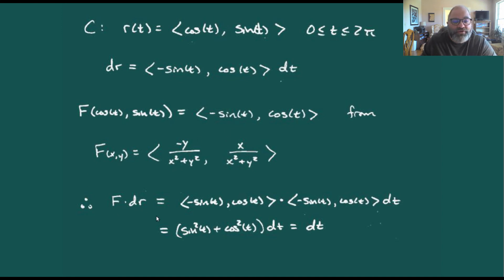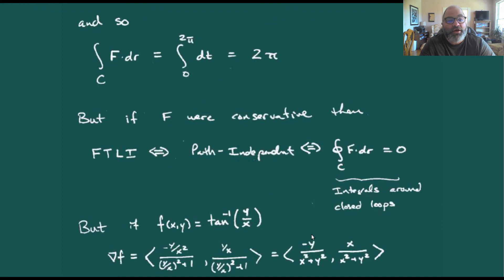Then doing F dot dr, we get minus sine cosine dotted with minus sine cosine, so sine squared plus cosine squared dt, we just get plain old dt. When we do the integration over this curve C of F dot dr, we get zero to two pi of just dt, so we get two pi.